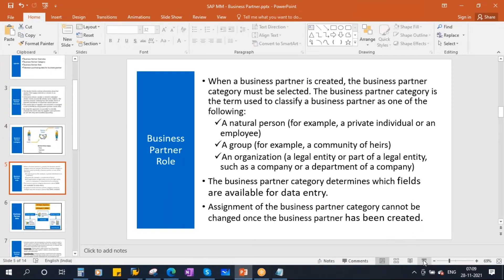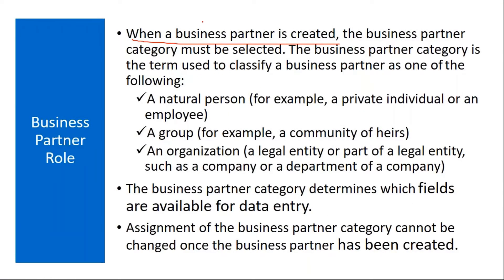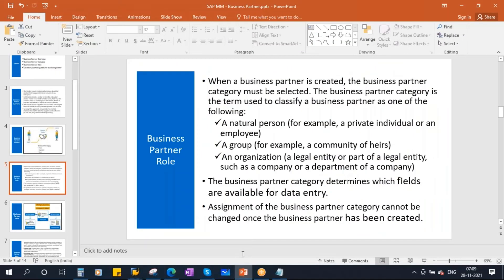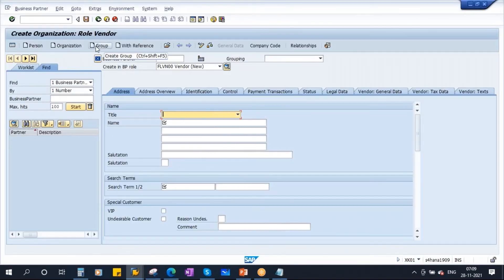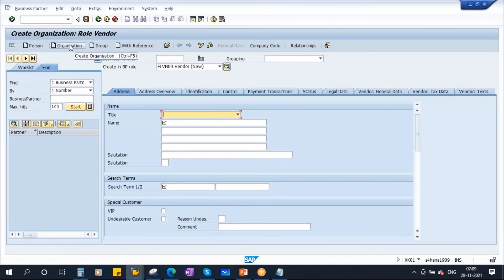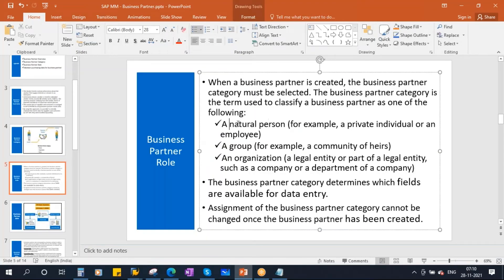When a Business Partner is created, the Business Partner category must be selected. The category classifies a business partner as a Person (individual), an Organization (legal entity), or a Group. In the MM module, you will most commonly use Organization, because the supplier is essentially another company. Person and Group categories are typically used in other modules like HR.